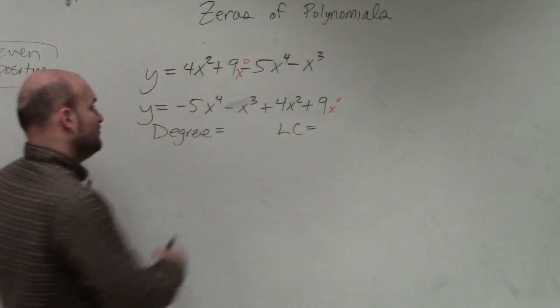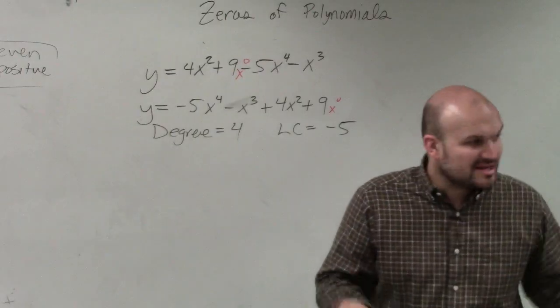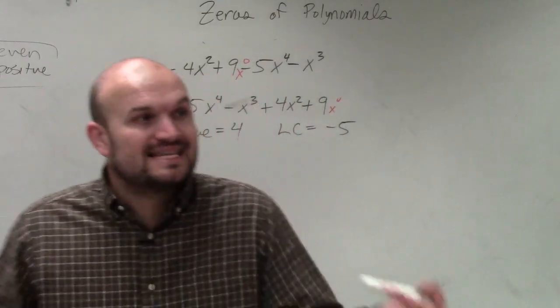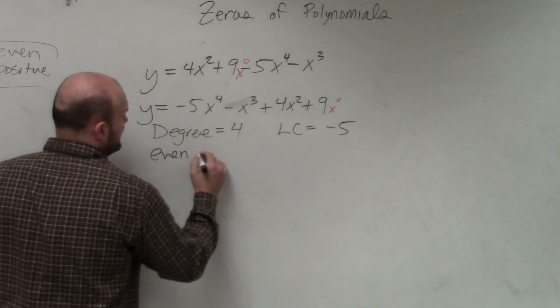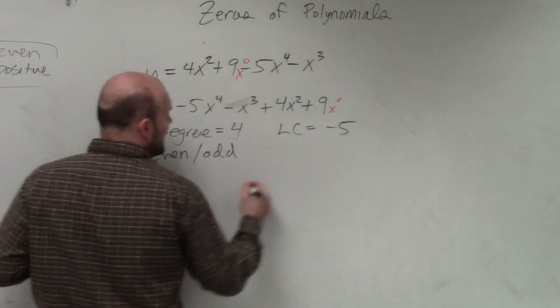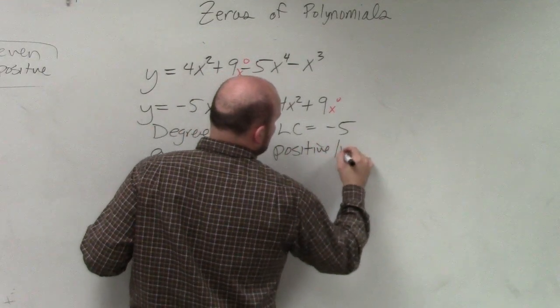So in this case, the degree is 4, and my leading coefficient is negative 5. However, as I mentioned, we don't really care what exactly the leading coefficient or the degree is for end behavior. We only care is the degree even or odd, is the leading coefficient positive or negative.